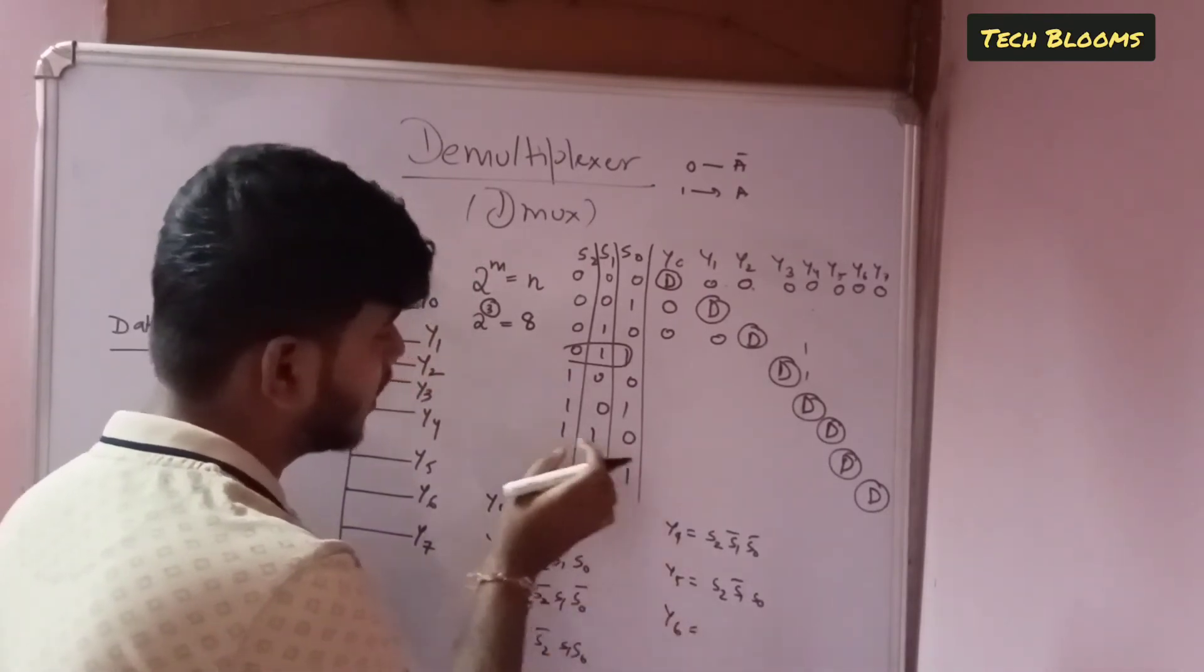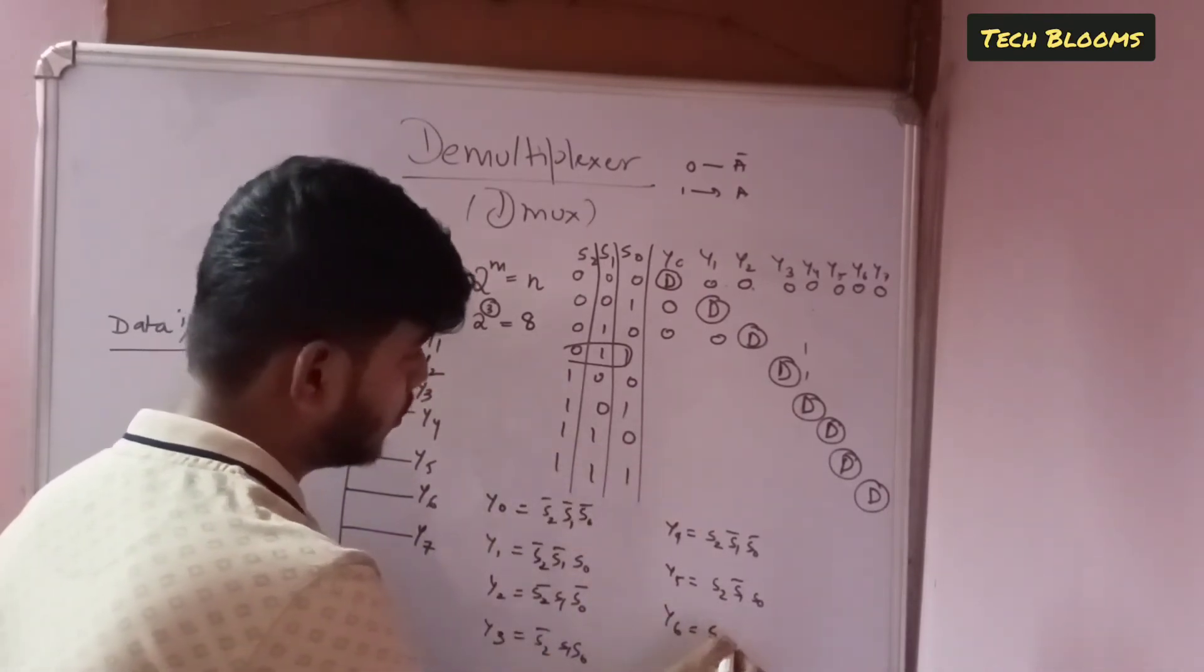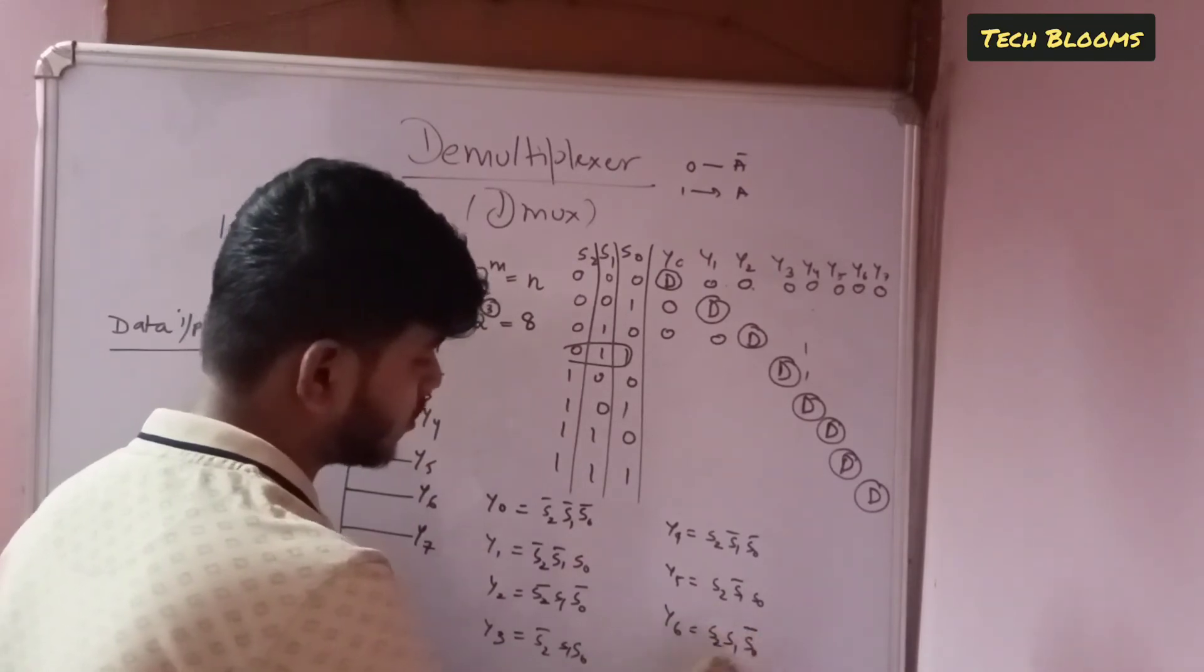Y4 will be s2 s1 bar s0 bar. Y5 will be s2 s1 bar s0. Y6 will be s2 s1 s0 bar.